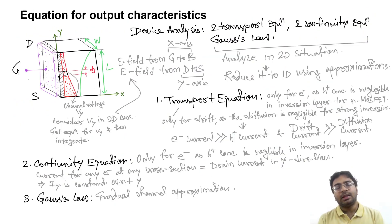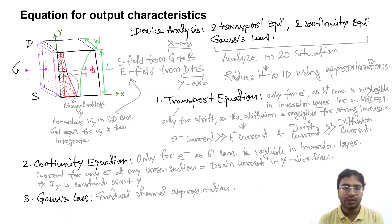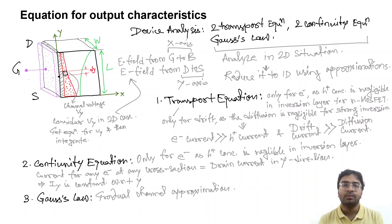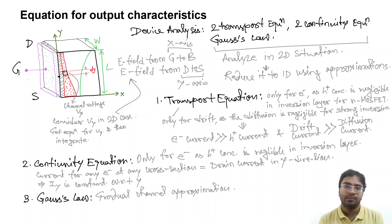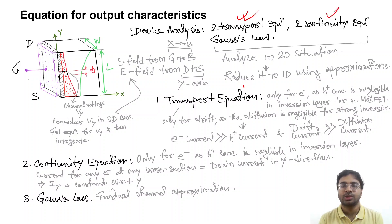Now let us find an equation related to the output characteristics. In order to achieve that, we know that in all device analysis, we have to solve five basic equations. We already have discussed this. Those five equations are two transport equations, two continuity equations, and Gauss's Law.